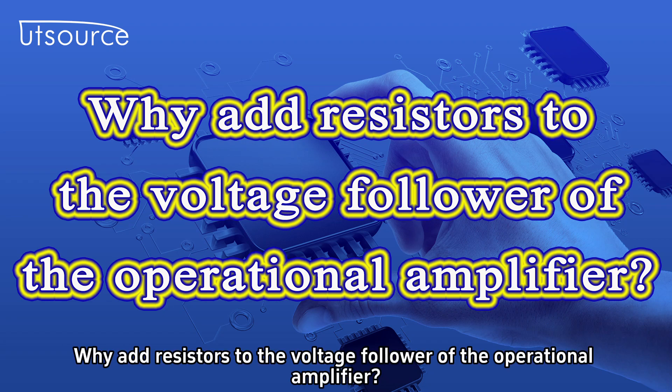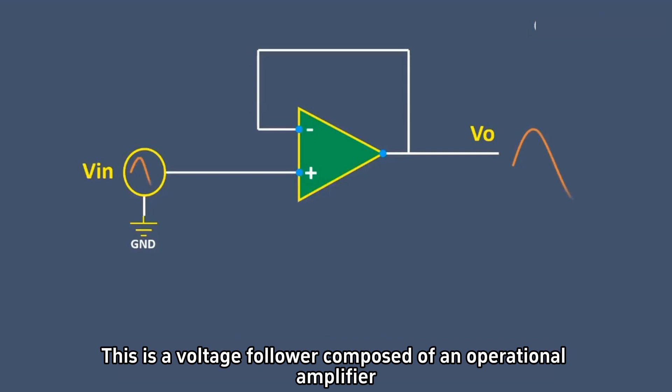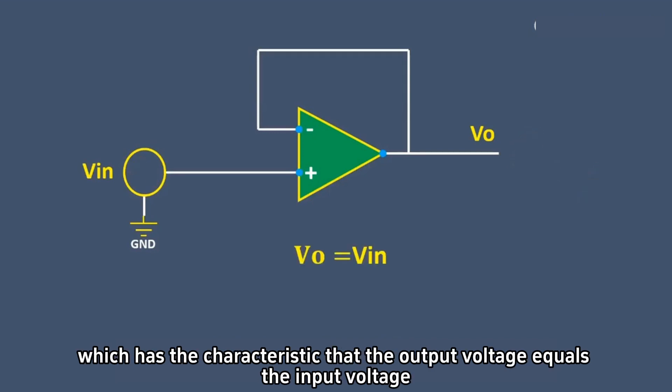Why add resistors to the voltage follower of the operational amplifier? This is a voltage follower composed of an operational amplifier, which has the characteristic that the output voltage equals the input voltage.